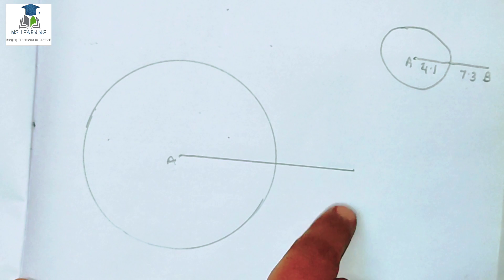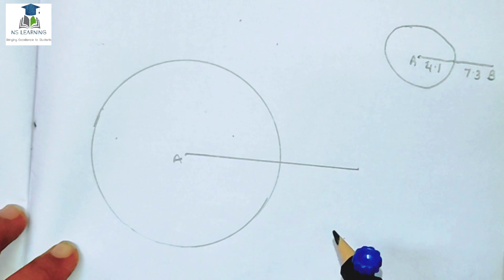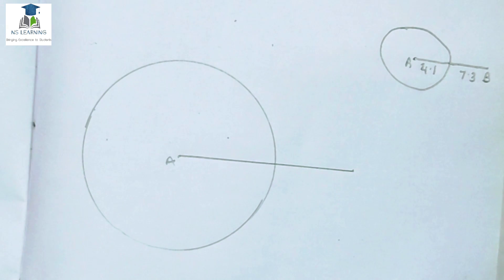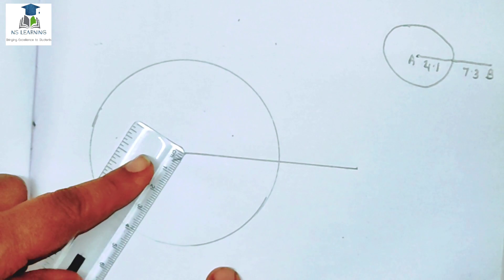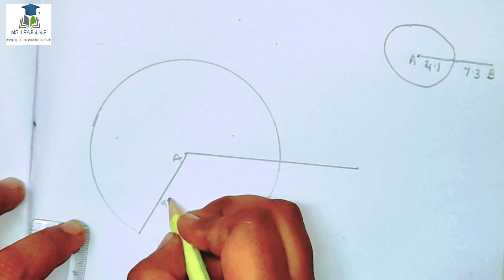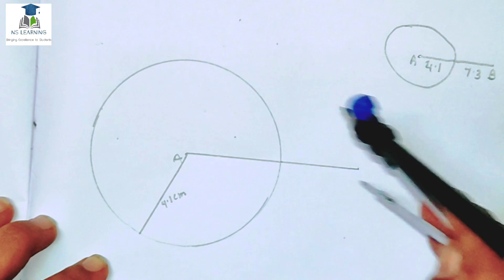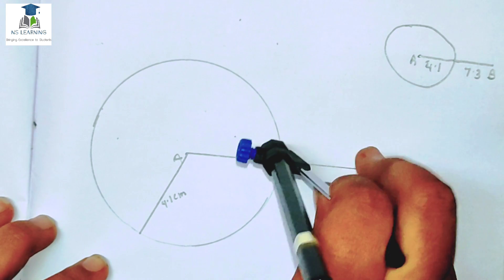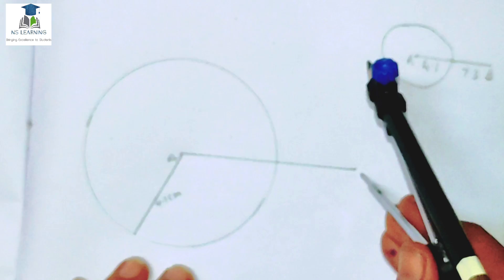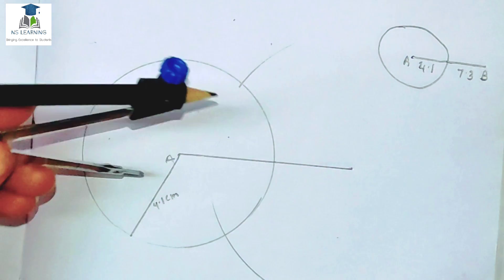अब हमें इसका line bisector draw करना है। Line bisector की help से हम tangent draw करेंगे। Radius कितना था — circle में कहीं भी radius same 4.1 cm का होगा। Line bisector draw करेंगे — यह point है, यहाँ से इस line का measurement more than half लेंगे। Upper side और lower side — same procedure इस point के साथ भी करेंगे।